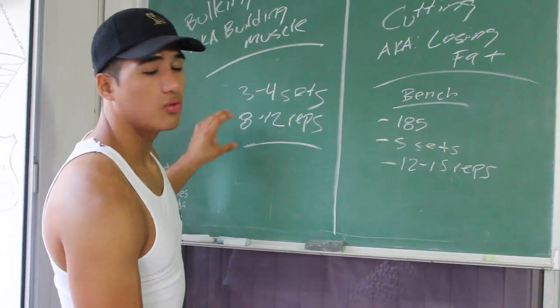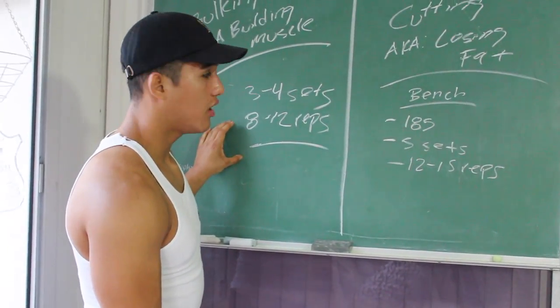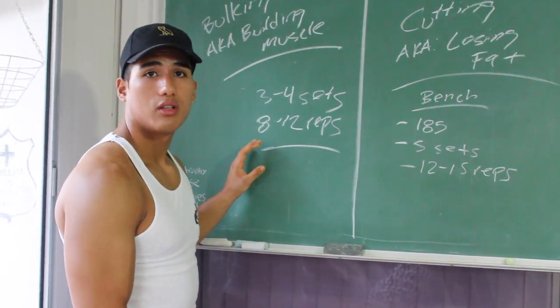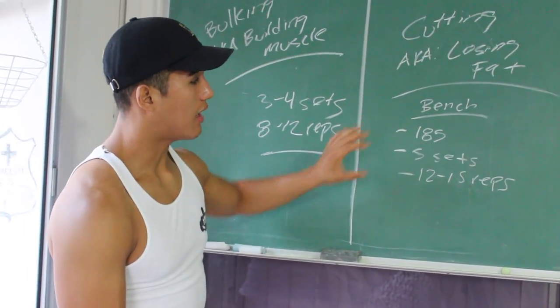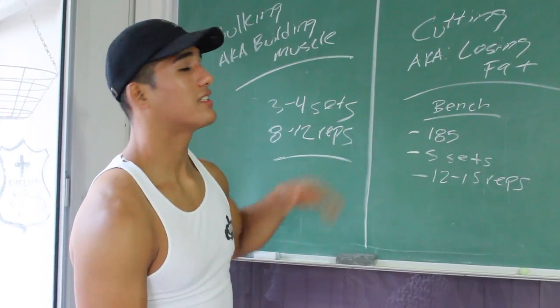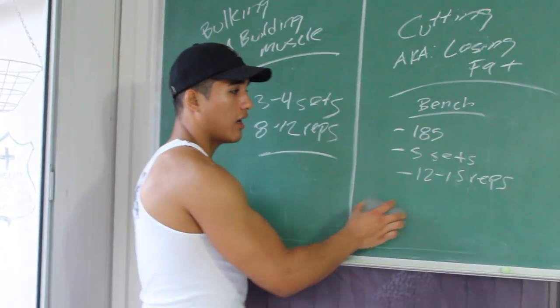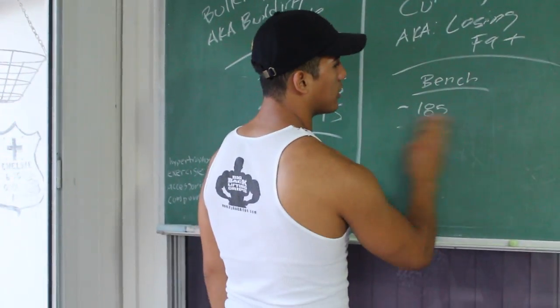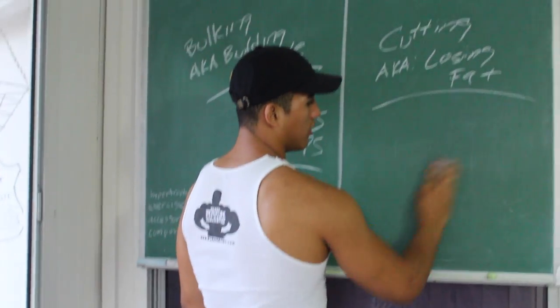So if you guys notice here, I was doing 235 for 8 reps, really filling it up so I can get stronger. And before I was doing 185, 5 sets and 12. That's another indicator - that's why when we're cutting we do get weaker.